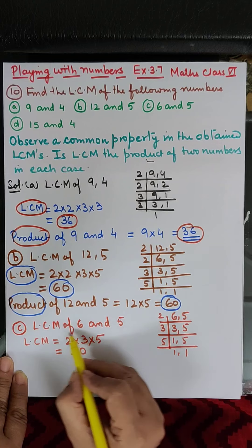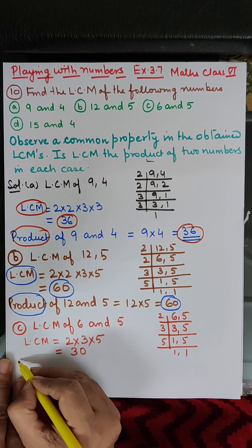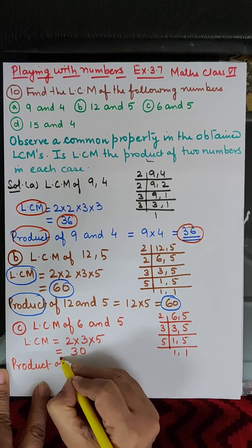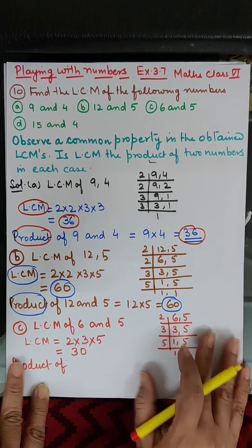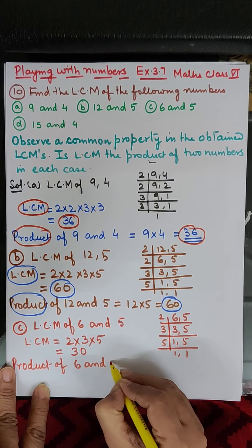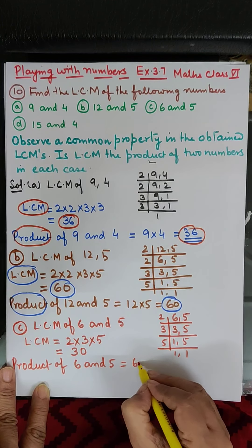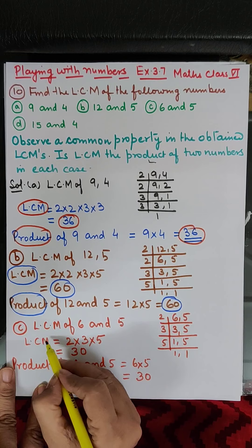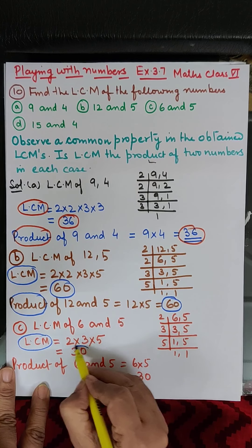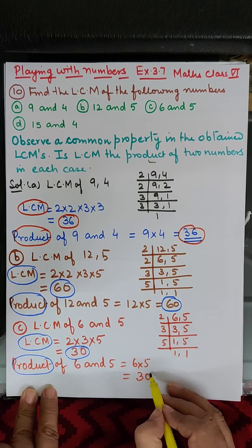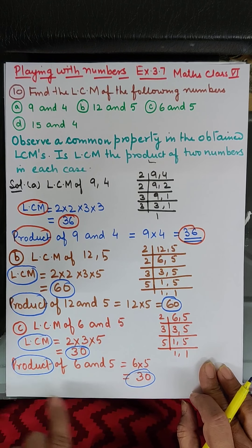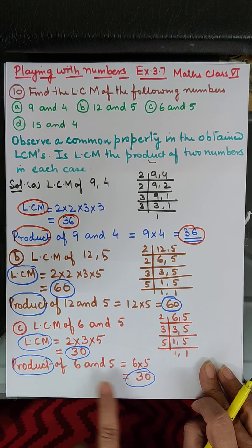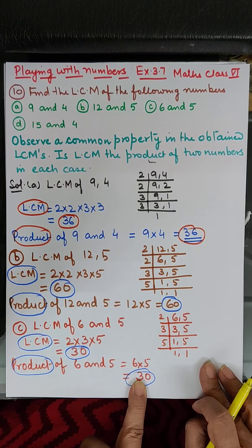Now let us take the product of 6 and 5. Product of six and five: six into five which is equal to thirty. So LCM is 30 and product is 30. Here we are observing that the LCM of the two numbers is equal to the product of the two numbers.